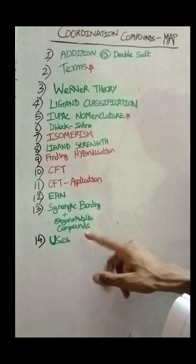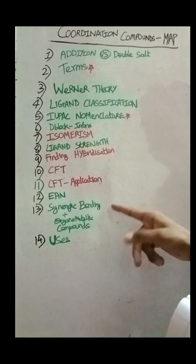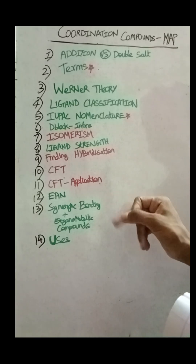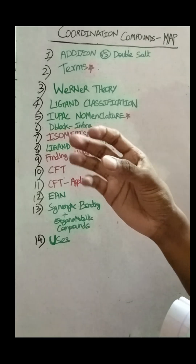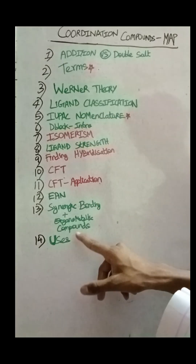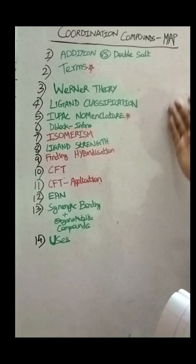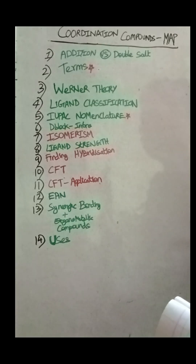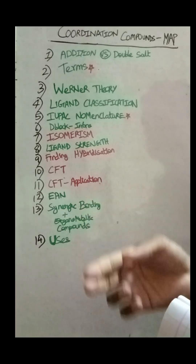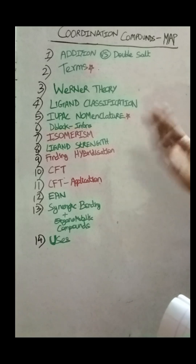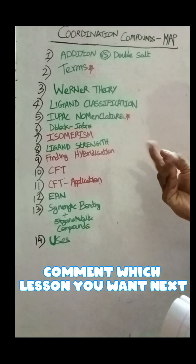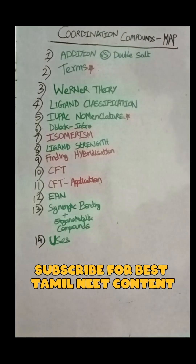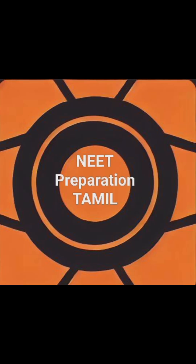Synergic bonding and organometallic compounds — in 2024, there is a need for this question, so this is a very simple concept and easy to explain. The 14th concept, uses, is just a small segment. So this is the map for Coordination Compounds. If you study chemical bonding in the 11th or 12th standard, or D-Block, I will teach you in this video. Let's start the playlist — thank you.